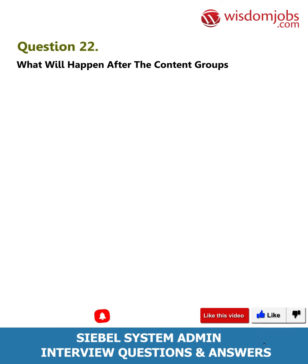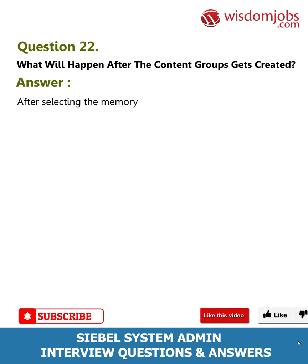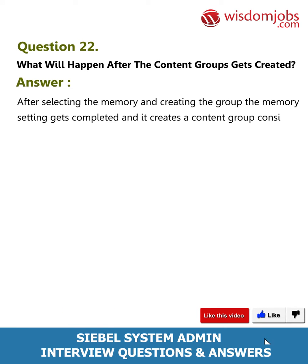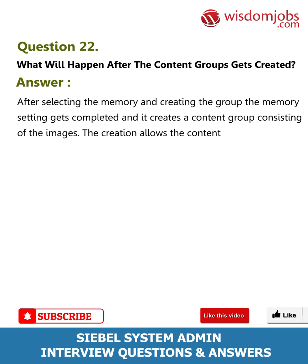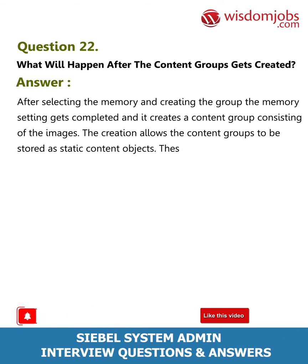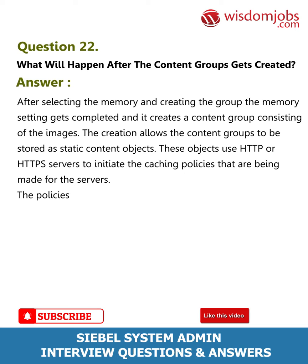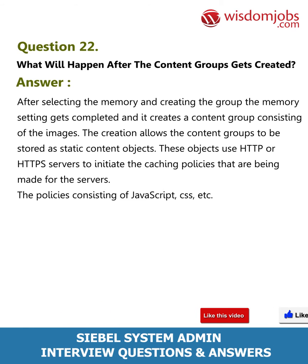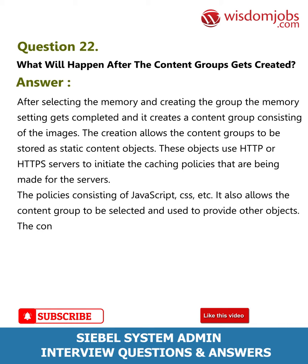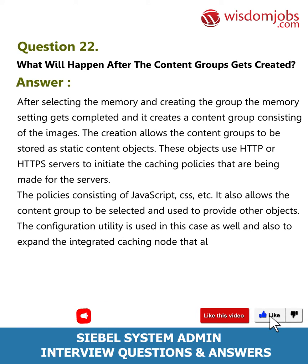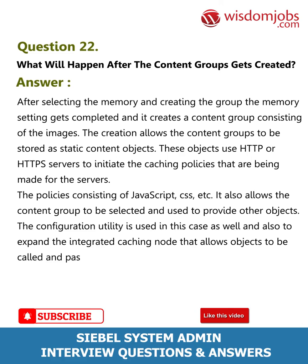Question 22: What will happen after the content group gets created? Answer: After selecting the memory and creating the group, the memory setting gets completed and it creates a content group consisting of images. These objects use HTTP or HTTPS servers to initiate the caching policies made for the servers. The policy consists of JavaScript, CSS, etc. It also allows the content group to be selected and used to provide other objects, using the configuration utility to expand the integrated caching node.